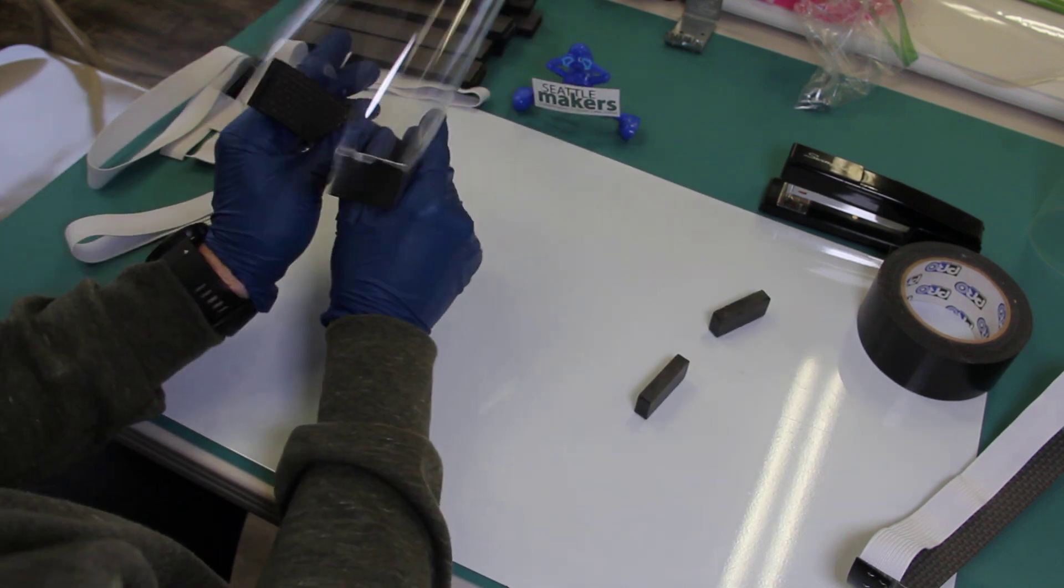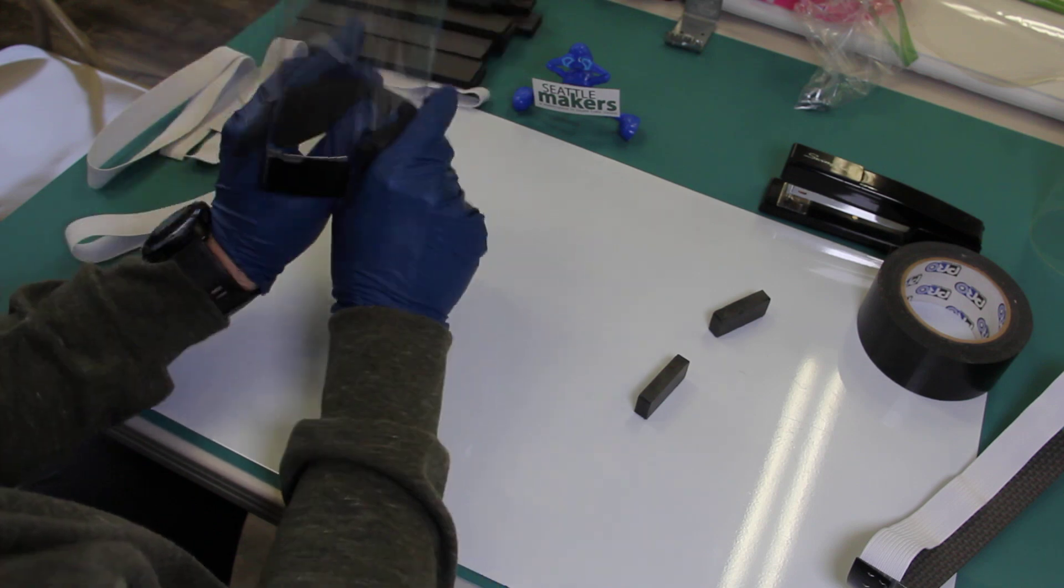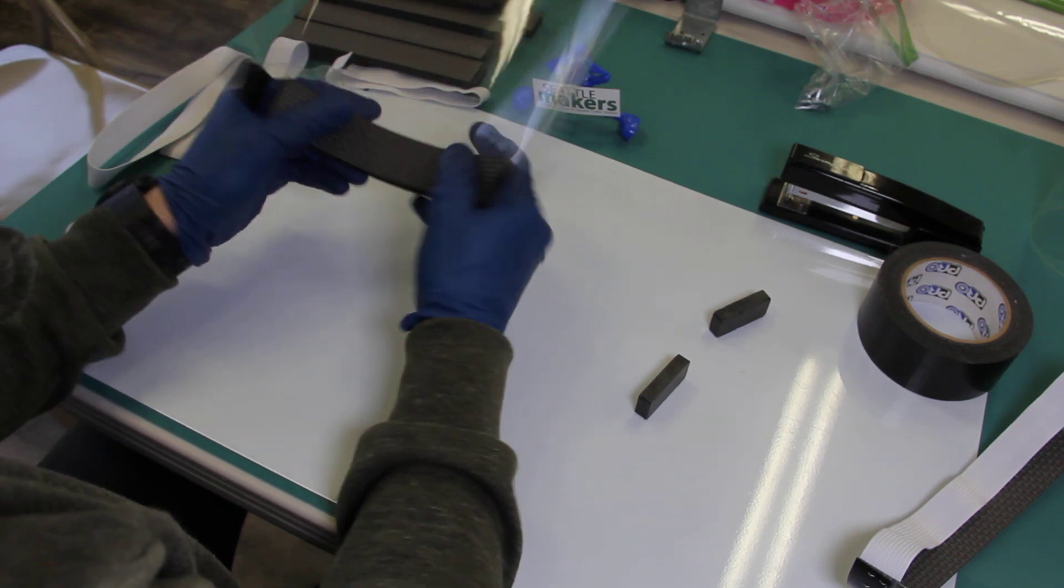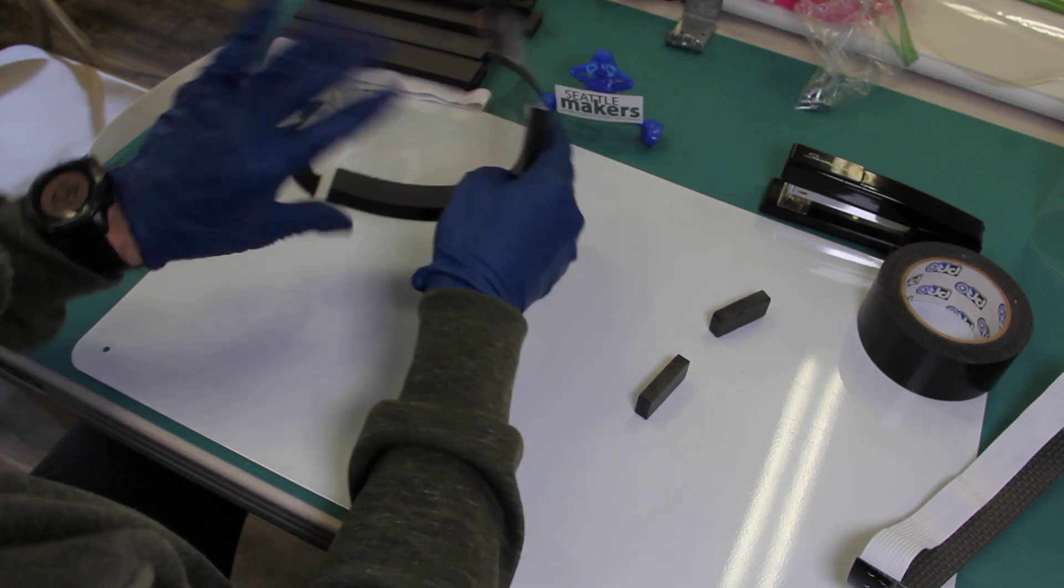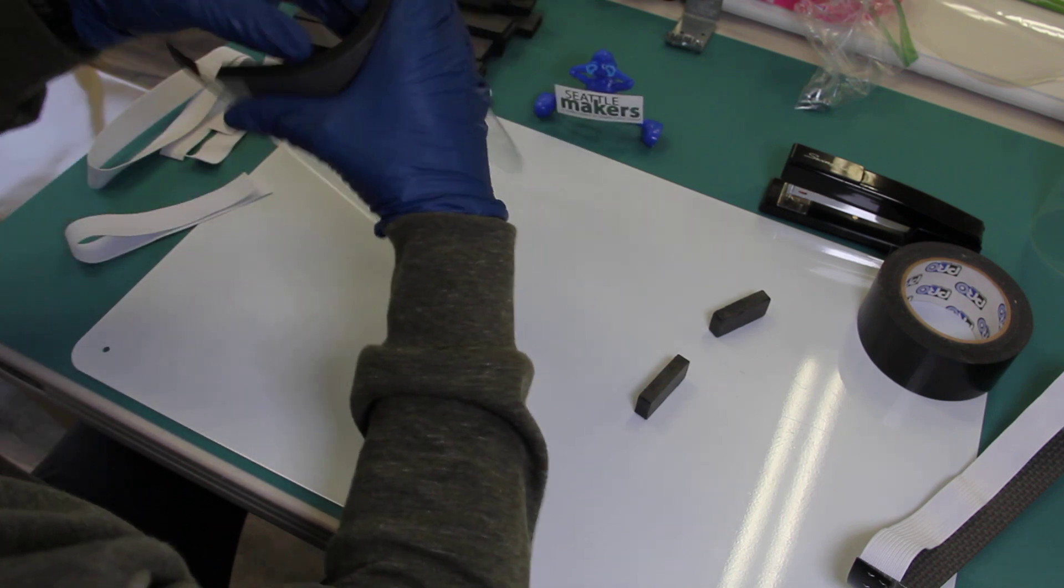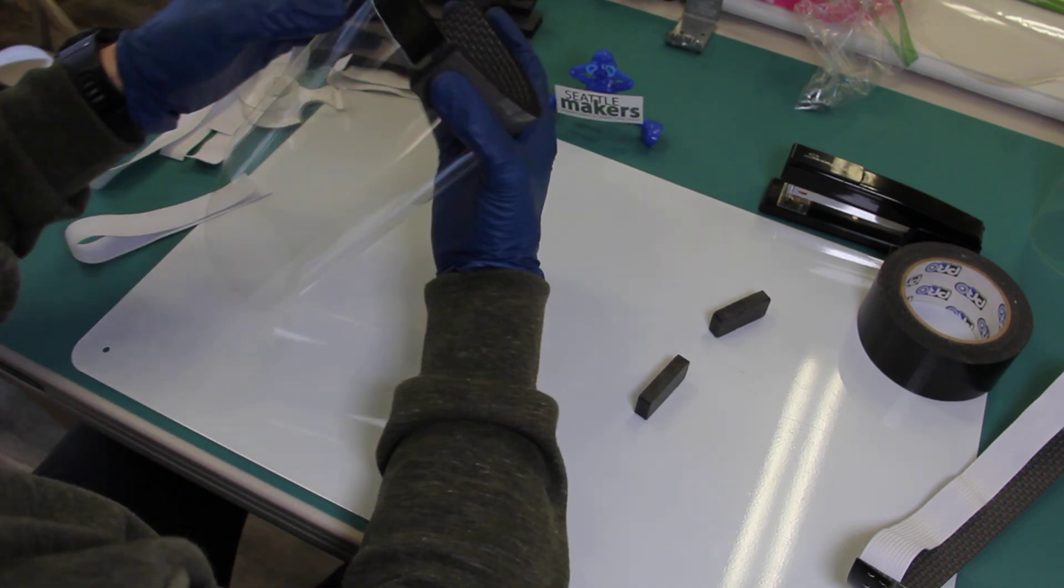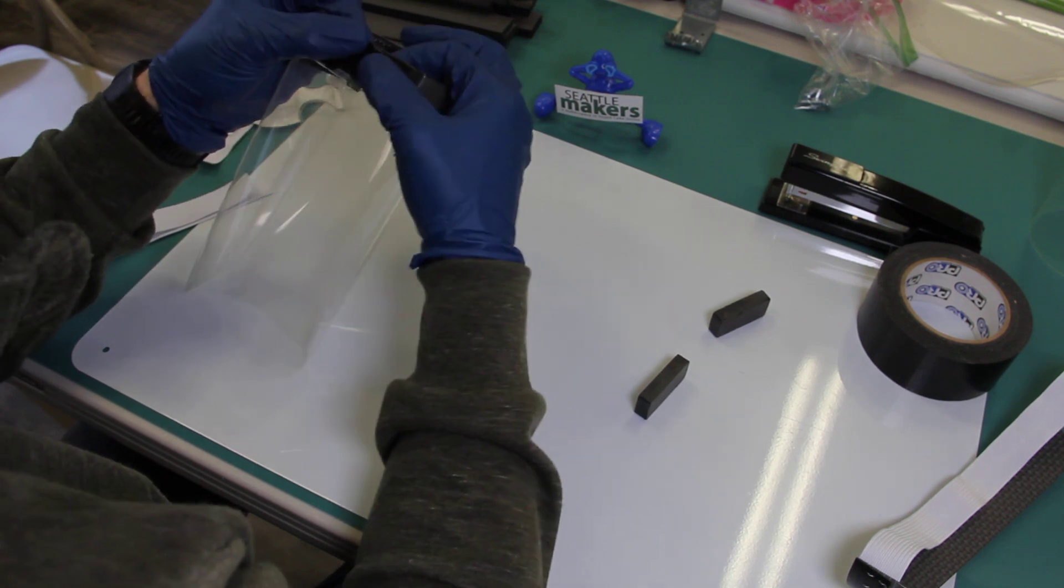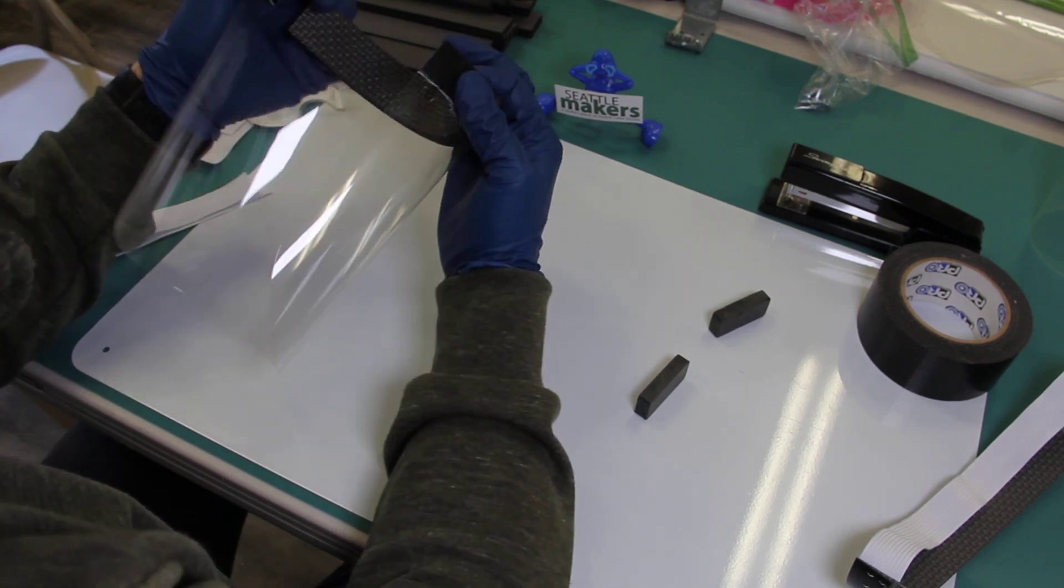You can bend some curve into this, and you might want to do that before the adhesive really sets up. Get a curve in there. It's going to bend pretty easily when you get it onto your face. And then the next step is to attach the elastic onto the back.